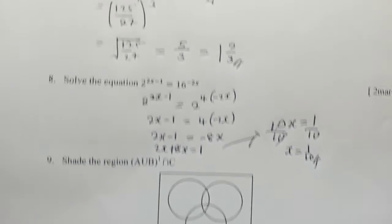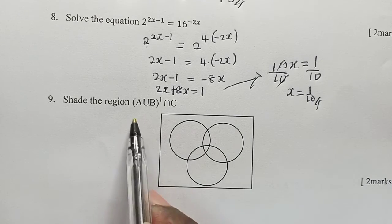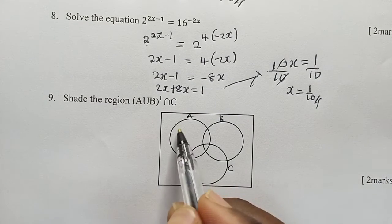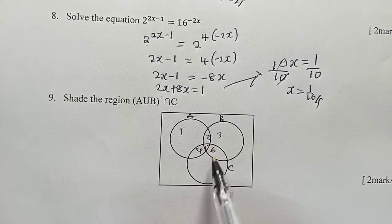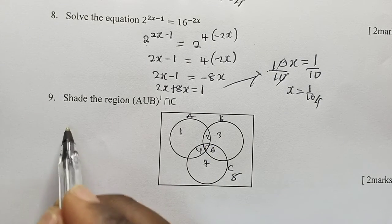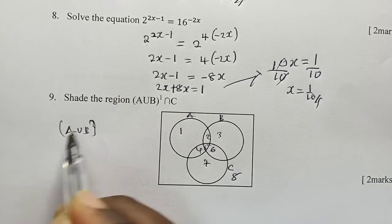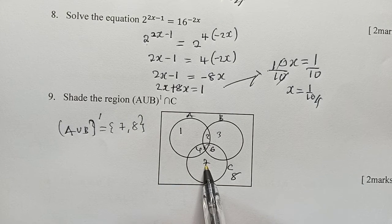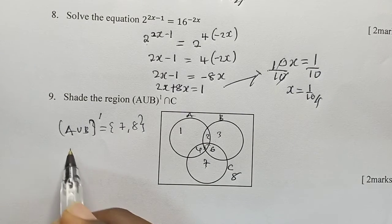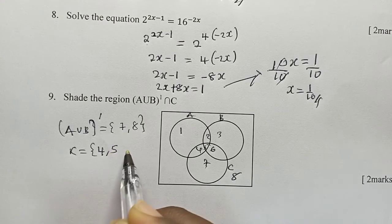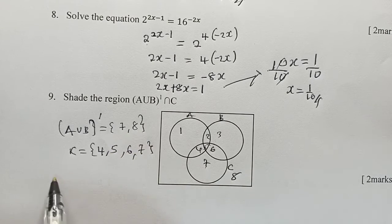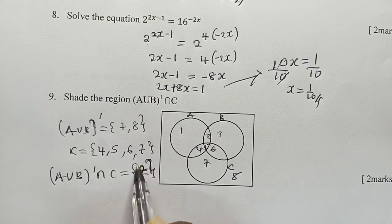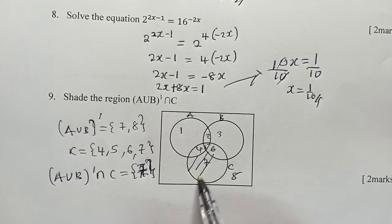Now we draw the Venn diagram and indicate numbers 1 through 8. We find A union B complement — what is not found in A or B — which gives us {7, 8}. Our set C is {4, 5, 6, 7}. A union B complement intersect C is the common element, which is just {7}. So we shade where 7 is found.